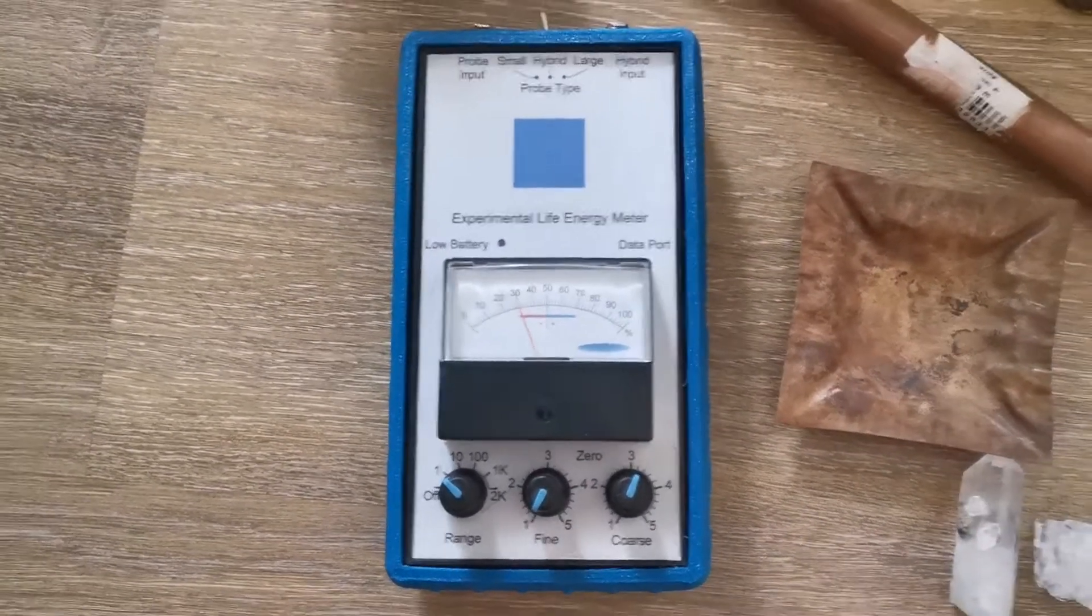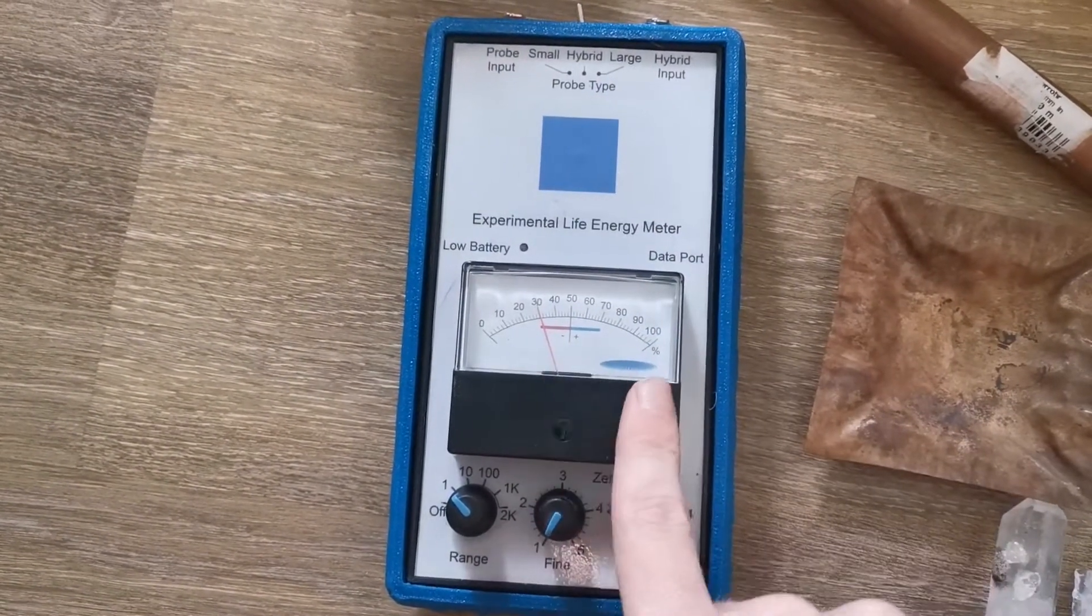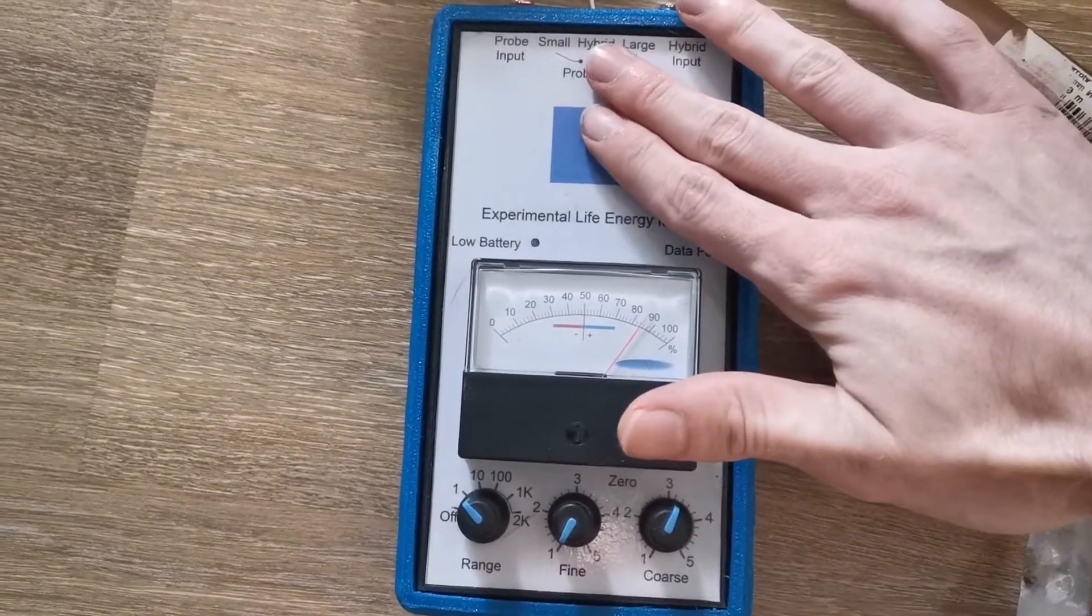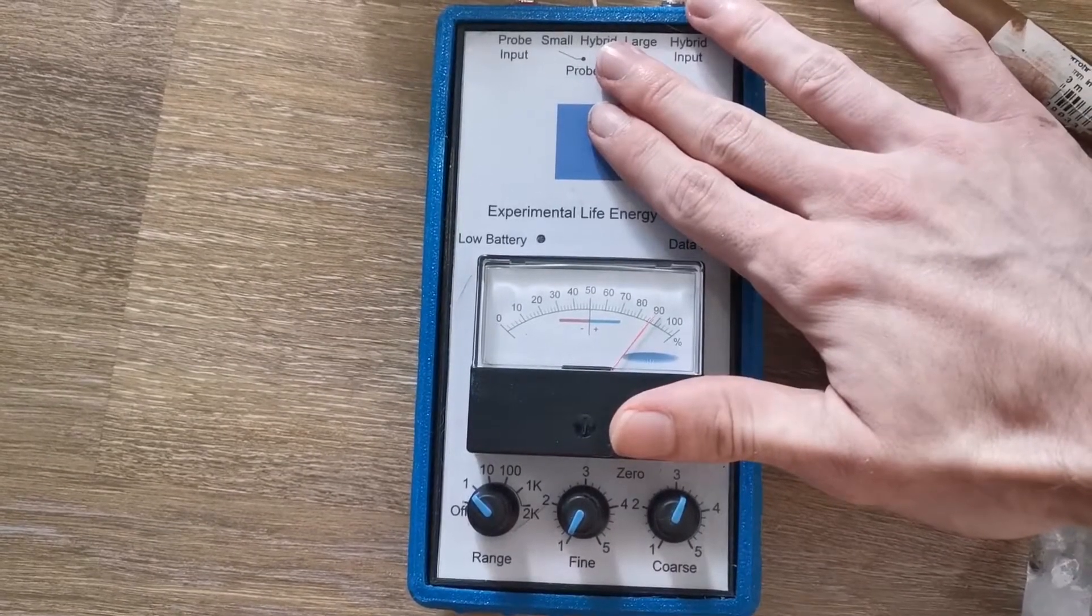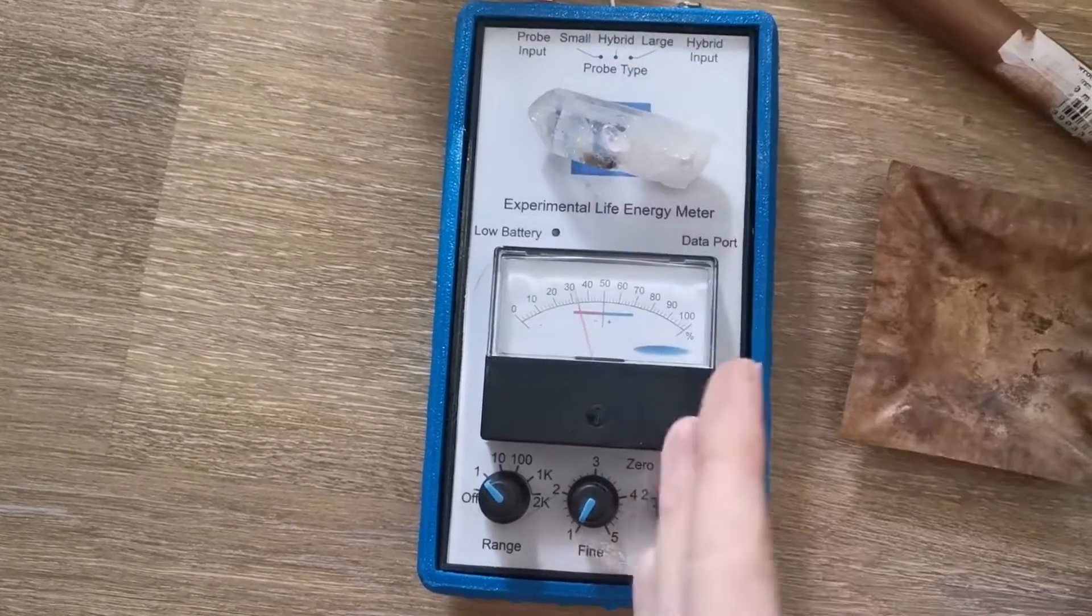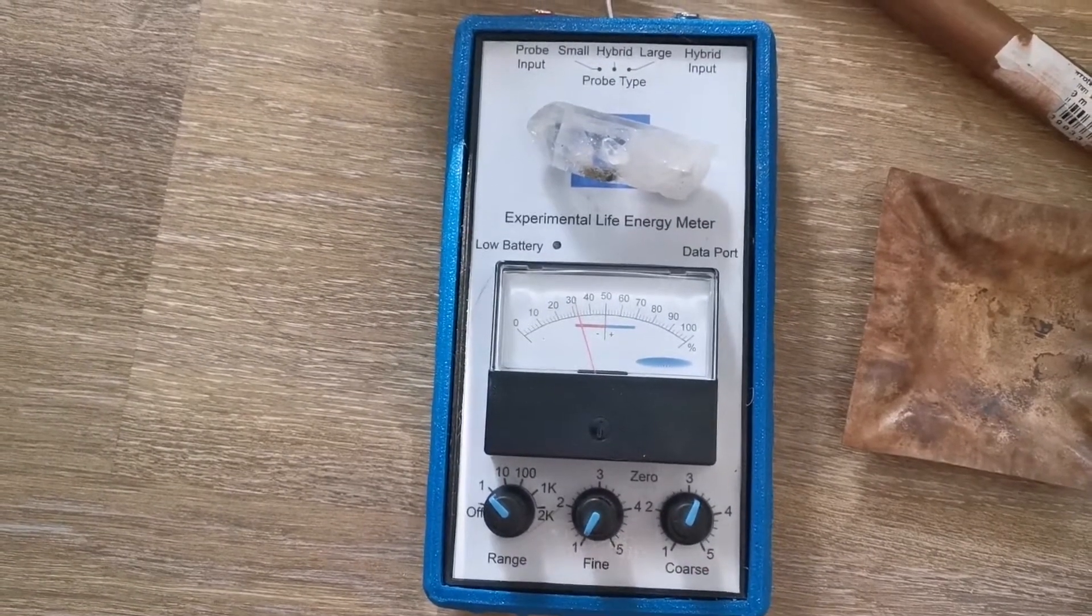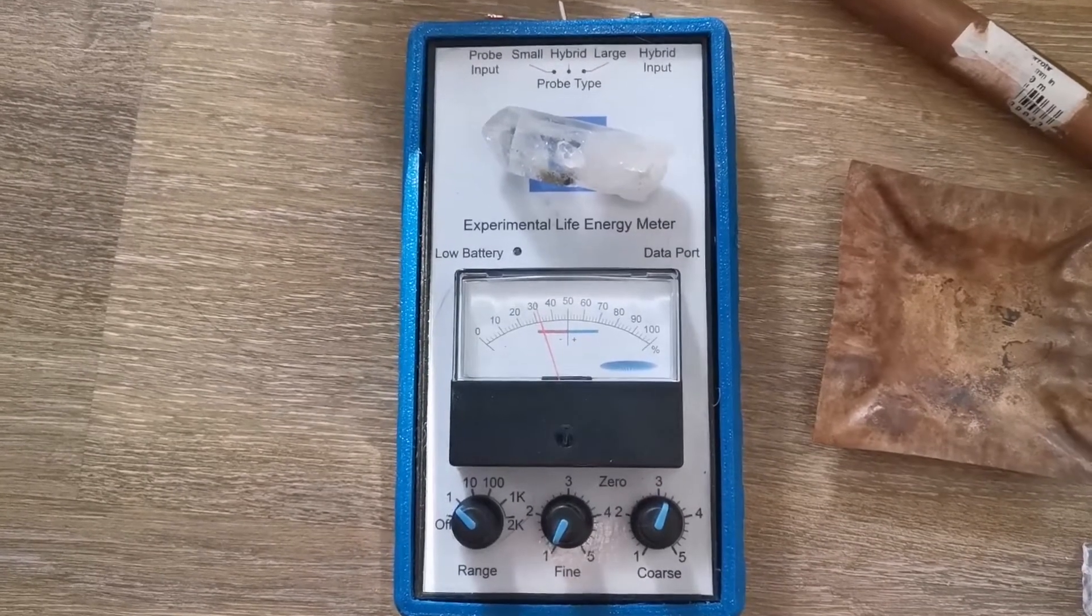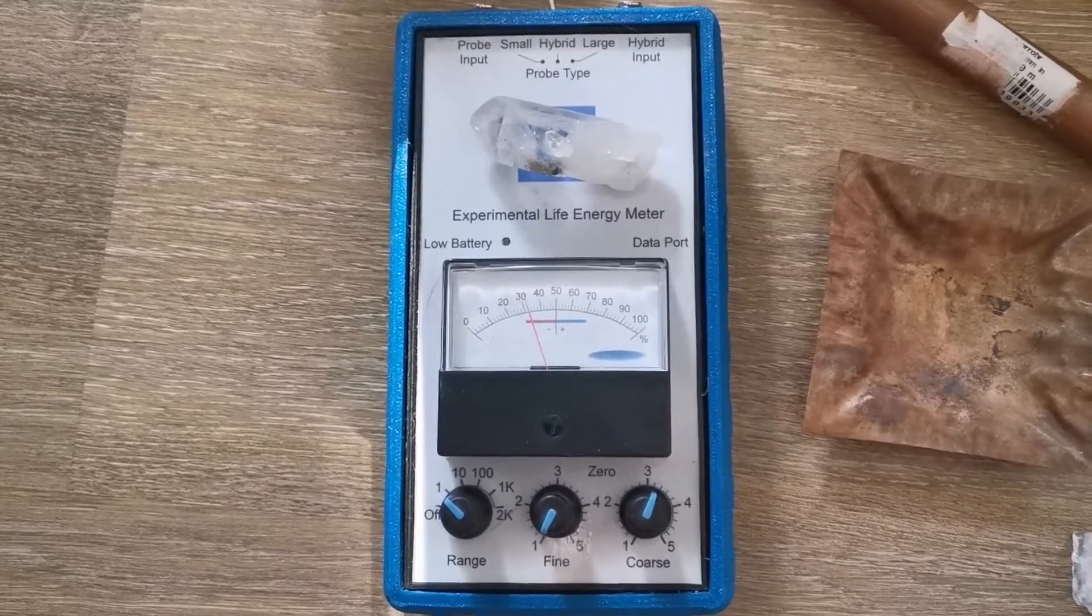And what I've seen is you can only increase the reading and not decrease it by putting anything on there. If I ground it basically, you see you get higher reading. It doesn't matter what you put on there, you will never get a lower reading. Except for alternating electromagnetic fields. That's where I get a lower reading. And I will show you what I mean.